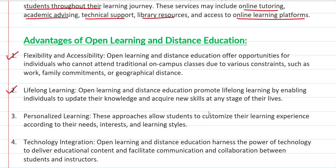Children get lifelong learning — proper learning that is helpful even after they finish. Even if they don't go to a school or university, they have this learning for a lifetime. Also, children can learn according to their own needs and learning styles, so their learning experience is customized.